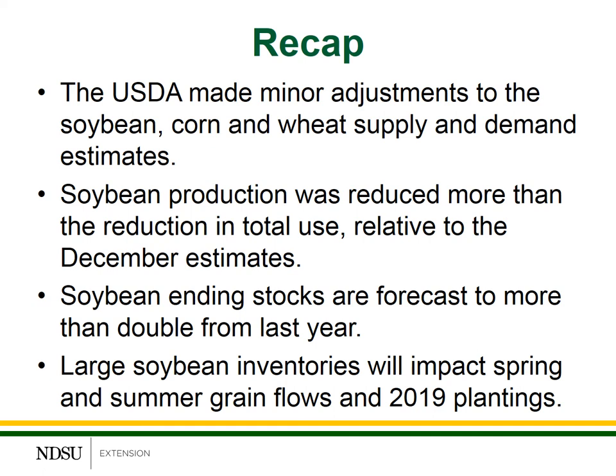So let's do a brief recap. USDA did make some minor adjustments to the soybean, corn, and wheat supply and demand estimates, but there were no major price shocks after the reports came out, primarily because the values were very similar to what private analysts and traders were expecting. Total soybean production was reduced, but it was reduced more than total use relative to the December estimates. Soybean ending stocks were also reduced relative to December, but are estimated to be more than double last year's values. These large soybean inventories will impact both spring and summer grain flows and pricing opportunities, as well as potentially 2019 planting intentions — which we'll talk about in a future recording.